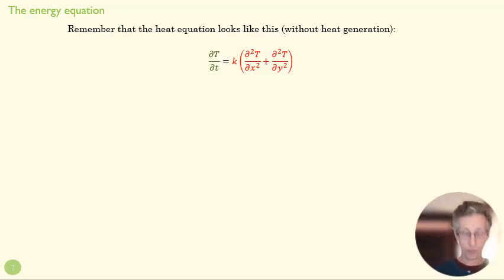Let's start with an equation that we derived earlier in the class, which is the heat equation. Here we have the change in temperature over time is going to be a result of how much thermal energy is diffused into that point. This is just a diffusion equation telling us that a point in space is going to heat up if there's more flux coming into that space than is leaving it.